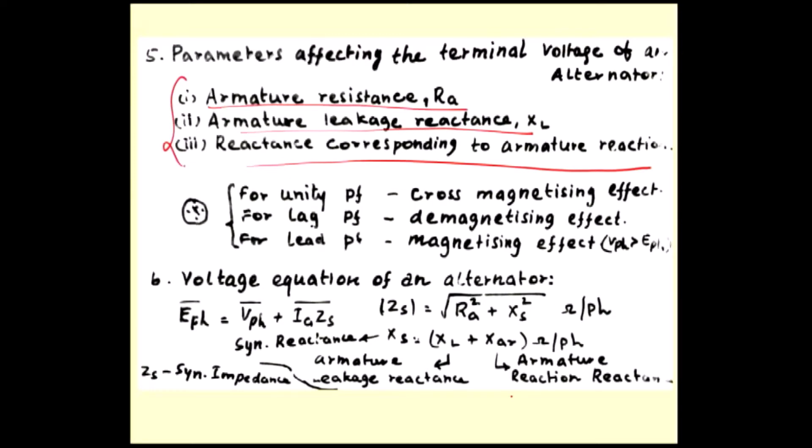Next one is armature reaction. In case of DC generator, the armature reaction only depends on the armature flux and the main flux. Whereas in AC generator, the load also decides the armature reaction. If you use pure resistive load, it will give the cross magnetizing effect. Lagging power factor load gives the demagnetizing effect. Leading power factor load gives the magnetizing effect.